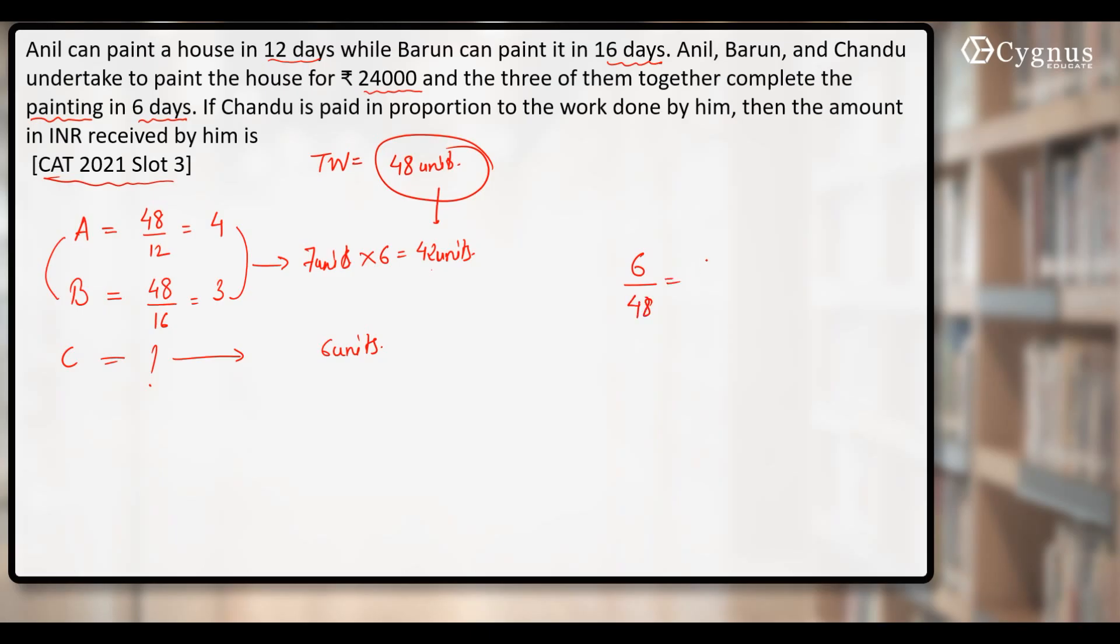Which is equivalent to 1 by 8. So definitely the amount received by Chandu will also be 1 by 8 of the total amount fixed for the work.